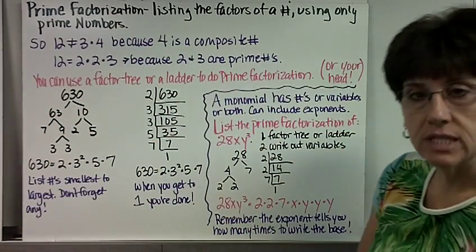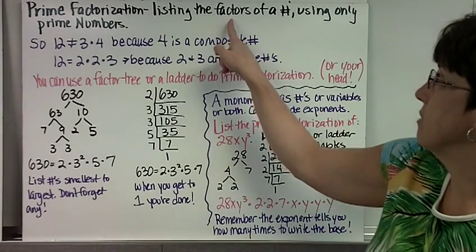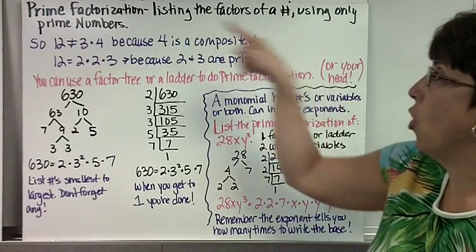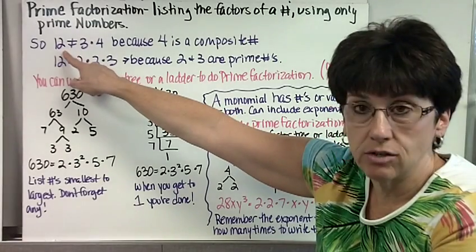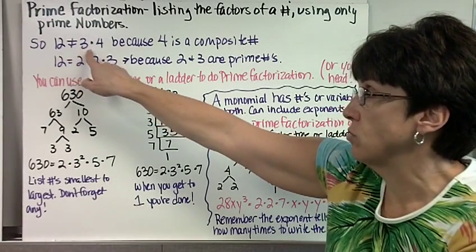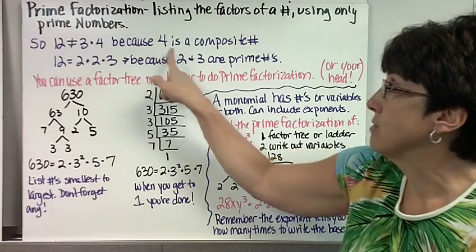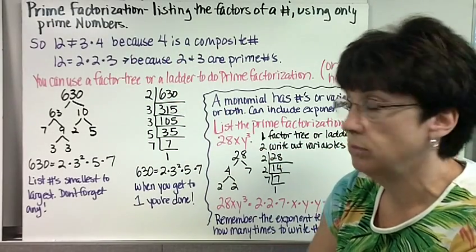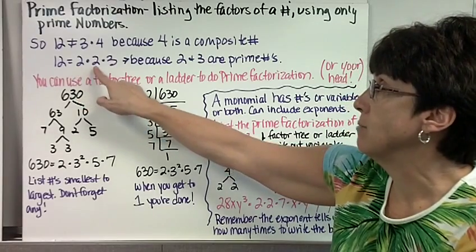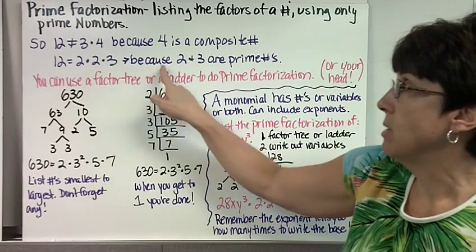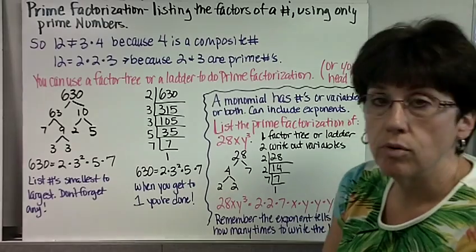Now prime factorization is listing the factors of a number using only prime numbers. So we can't say for prime factorization, 12 equals 3 times 4 because 4 is a composite number. We would have to say 12 equals 2 times 2 times 3 because 2 and 3 are prime numbers.